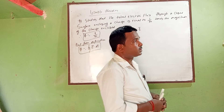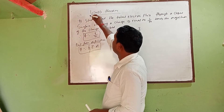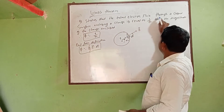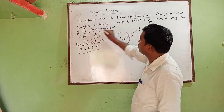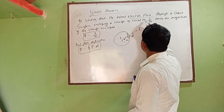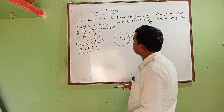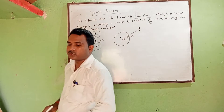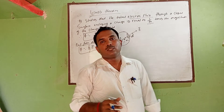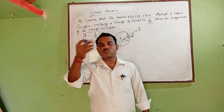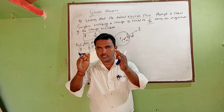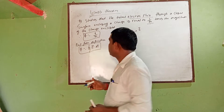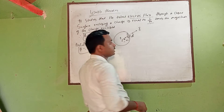The statement of Gauss theorem states that the total electric flux through a closed surface enclosing a charge is equal to 1 by epsilon naught times the magnitude of the charge enclosed. Electric flux means the total number of electric lines of force perpendicular to a closed surface.